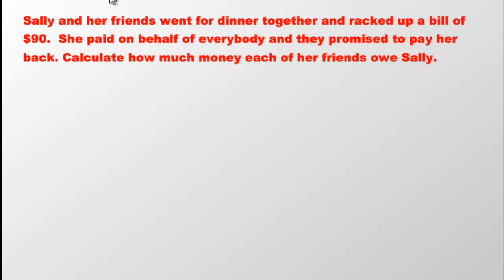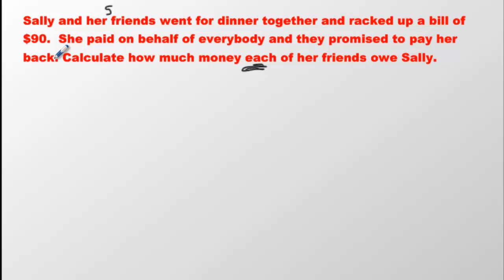Let's look at some word problems and try to understand which of these numbers are negative and which are positive. Sally and her five friends went to dinner together and racked up a bill of $90. Sally paid on behalf of everybody and they promised to pay her back. Her friends are in debt to Sally — they owe her $90 altogether, so this $90 is going to be negative $90.